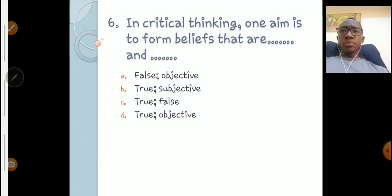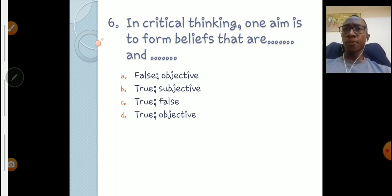Question number six: In critical thinking, one aim is to form beliefs that are [blank] and [blank]. False objective, true subjective, true false, or true objective? Yes, you are right - you want to form beliefs that are true in the first place, and secondly they should be objective. Objective is talking about standards. Subjective is all about feelings, gut feelings. And critical thinking has nothing to do with gut feelings. So you want to form beliefs that are true and objective. Very good. Let's move on to our seventh question.